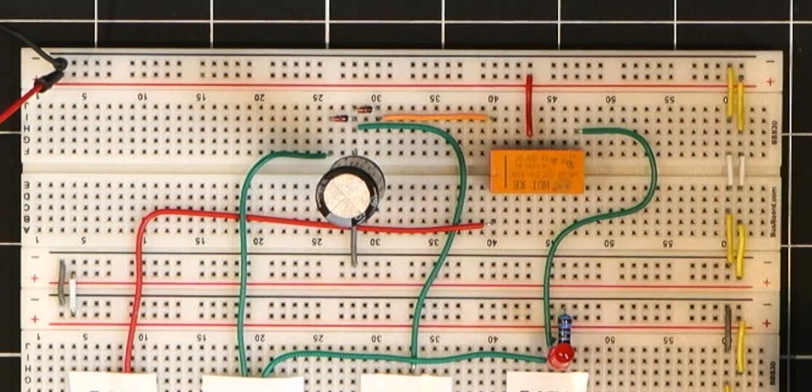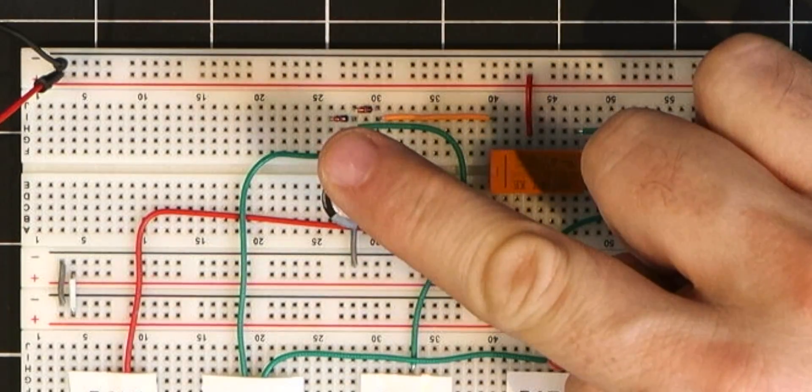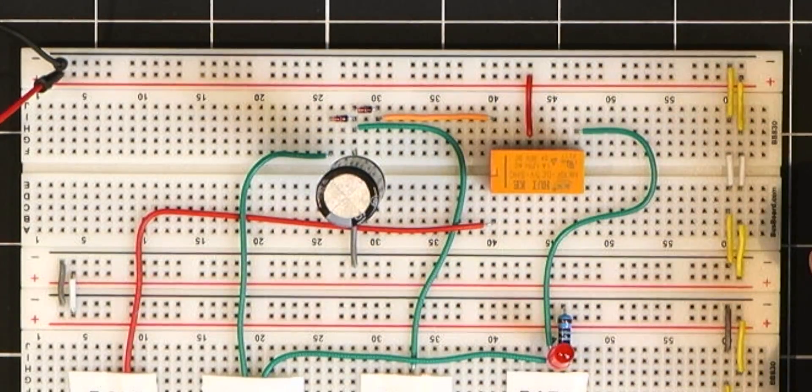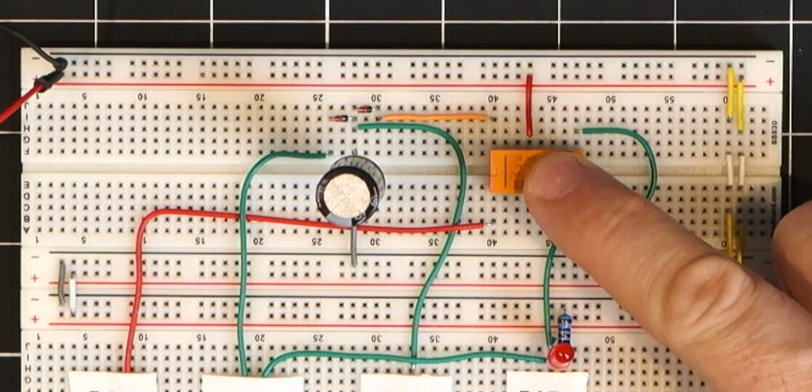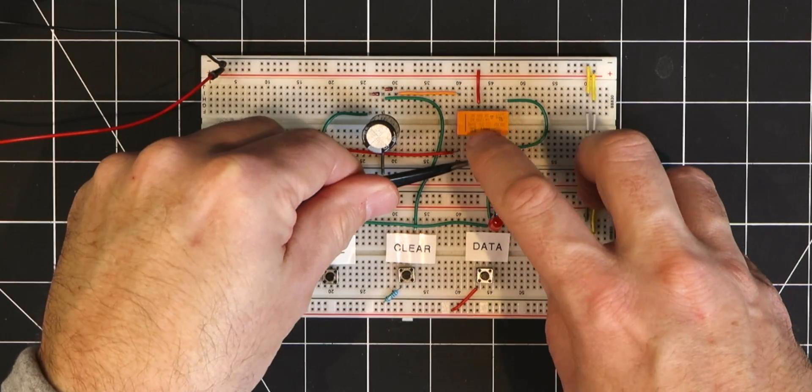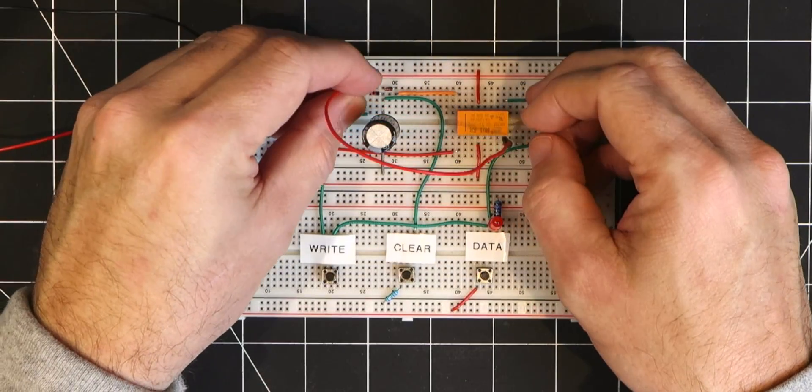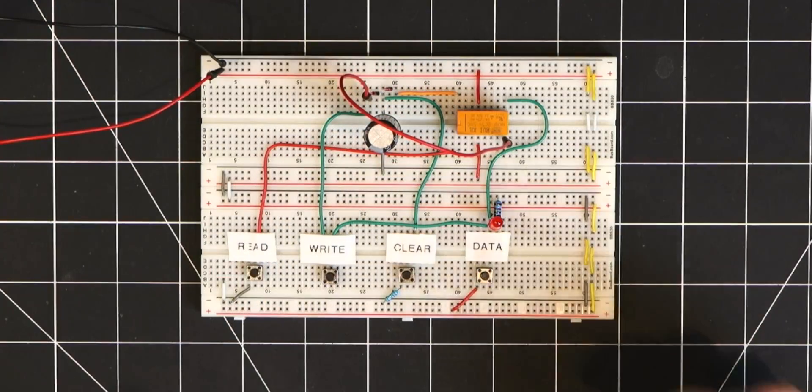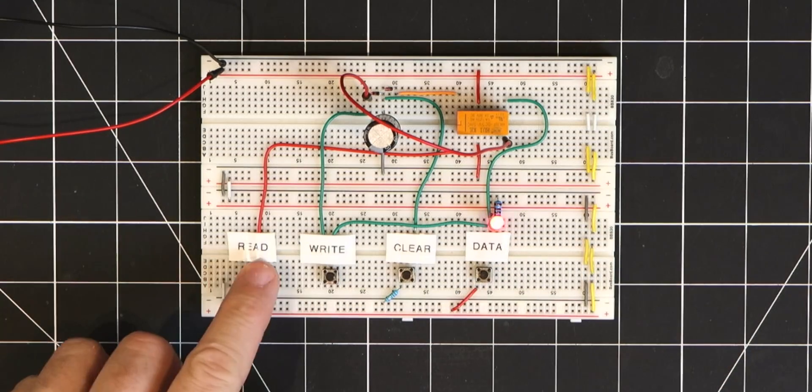On this circuit we can regenerate or recharge the capacitor when a read function is engaged by using this unused side of the gating relay. We can supply voltage to the common pin and link the normally open to the write line. This will rewrite the value of the capacitor each time it is read.